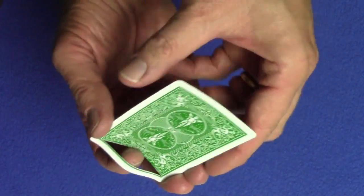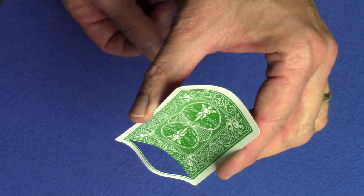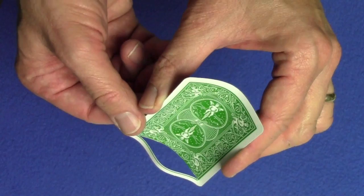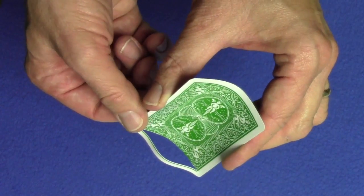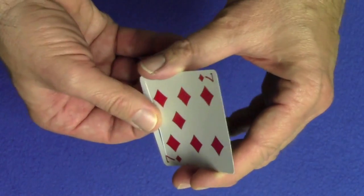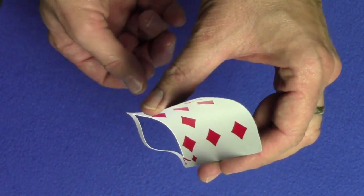You're going to say, 'I will bet you that I can make a hole in this card large enough that the entire card will fit around your head.' And they will take you up on that bet.